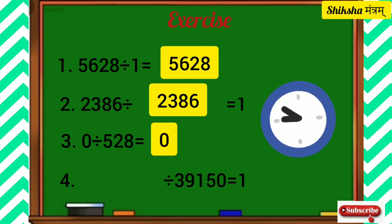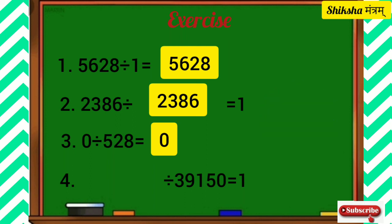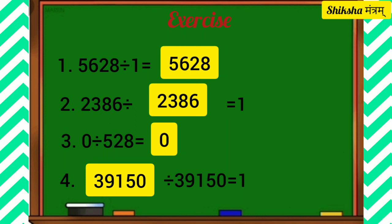Question number 4: What should be divided by 39,150 to give a quotient of 1? The correct answer is 39,150. Using the same property, when any number is divided by itself, the quotient is always 1.